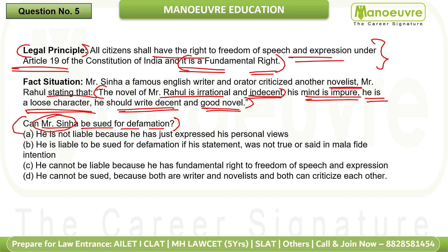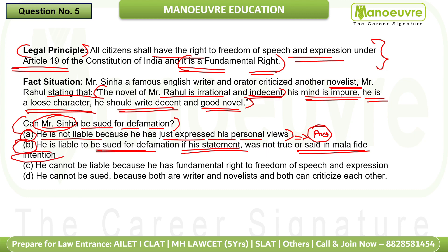Option A says he is not liable because he has just expressed a personal view — and looking at the principle, this is the correct answer. Option B says he is liable if his statement was not true or said with malicious intention — this may feel correct emotionally, but the principle here is purely about expression, so control your moral instincts and stick to the legal principle. Option B is eliminated.